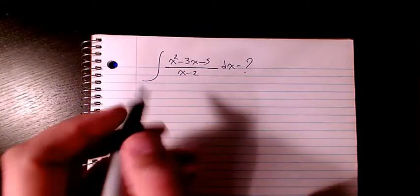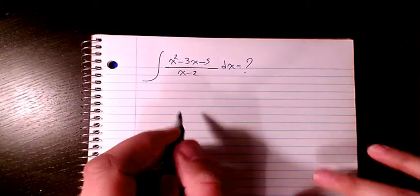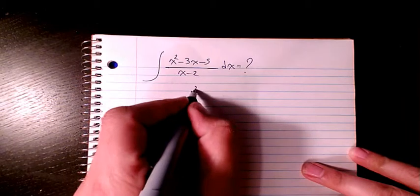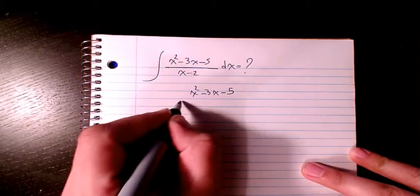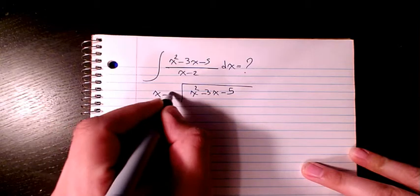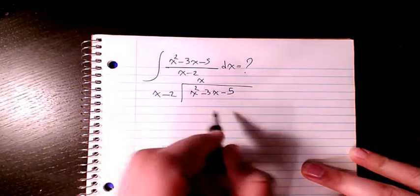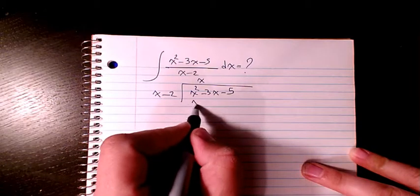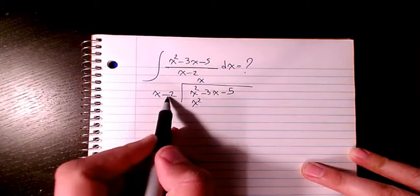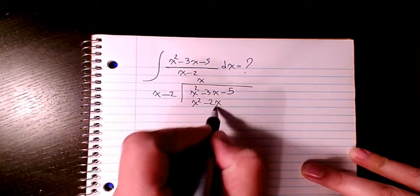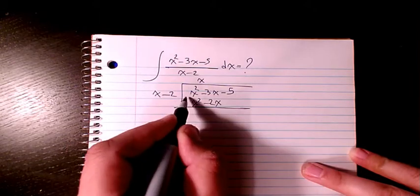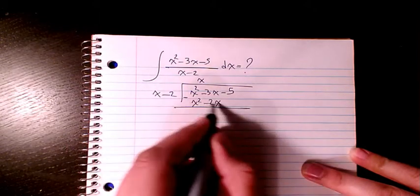So it's going to be x squared minus 3x minus 5 divided by x minus 2. x squared divided by x is x. So x times x is going to be x squared, x times negative 2 is going to be negative 2x.